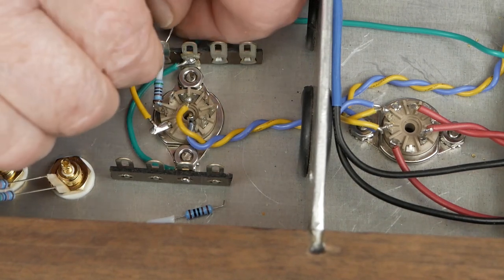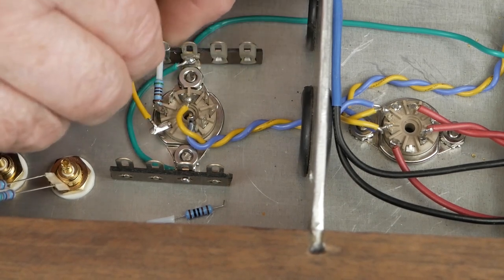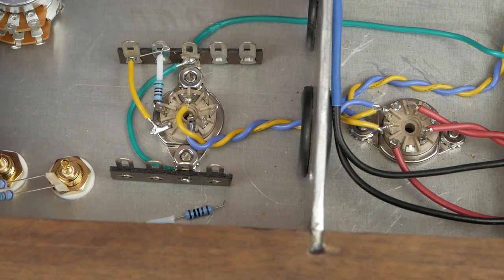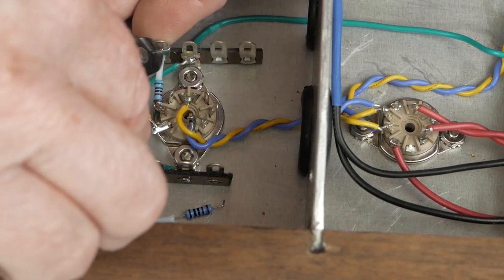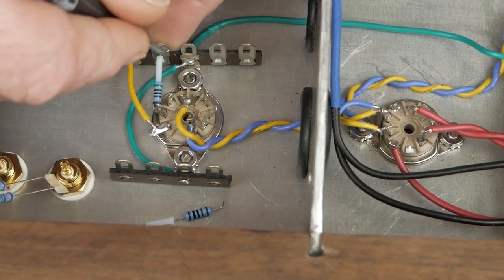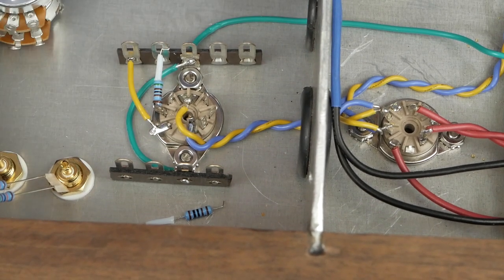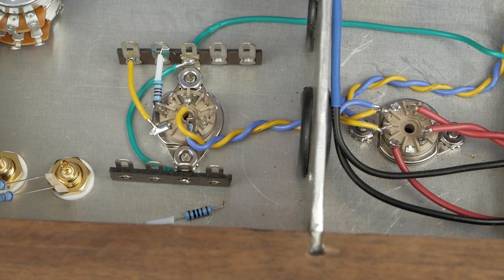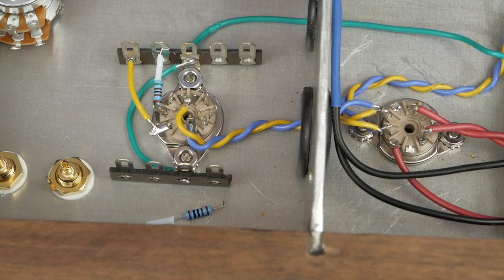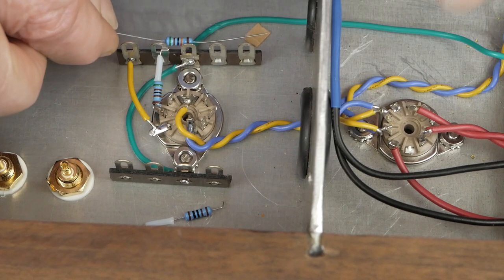And then we're going to have a couple of other things tied to this one. So we're going to wrap this around. Trim that off. And while it isn't required, I like putting these little pieces of PTFE tubing on there when applicable. So the other thing we're going to have is this 510k grid leak resistor that goes right across there.